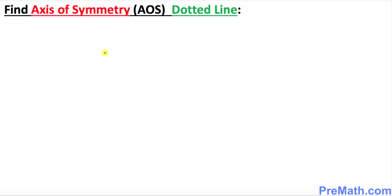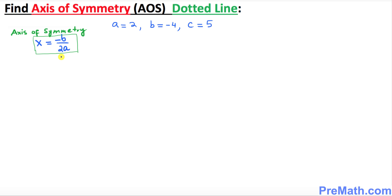In this step we are going to find the axis of symmetry. Here is our axis of symmetry formula: x equals negative b over 2a, where we know our a value is 2, b is negative 4, and c is 5.